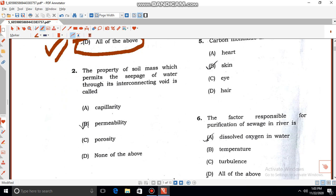Let me go to the second question. The property of soil mass which permits the passage of water through its interconnecting voids is called... Capillary means when you have a tube in water, the water level rises - it may be concave or convex depending upon the materials, depending upon the adhesion and cohesion force. So capillary is the rise of water, so this is not the option.